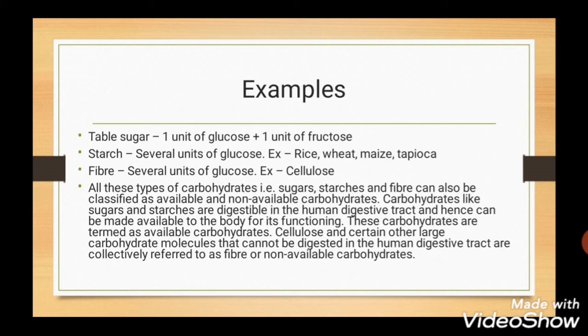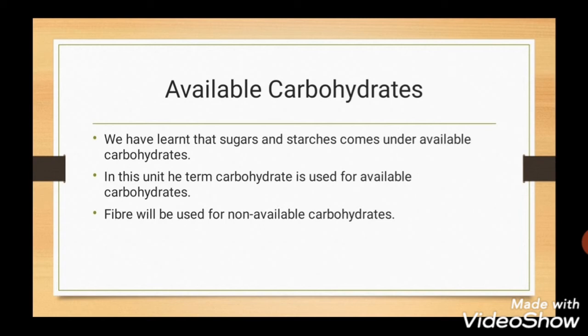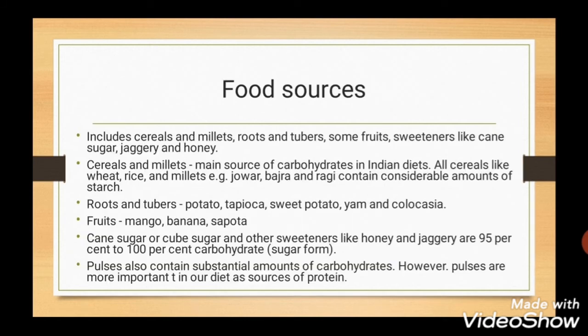Available carbohydrates include sugars and starches. Wherever the term 'carbohydrates' is used, it refers to available carbohydrates, and the term 'fibers' refers to non-available carbohydrates. Food sources of available carbohydrates include cereals and millets, roots and tubers, fruits, cane sugar and pulses. It is important to memorize these food sources, not only for exam purposes but also for preparing diet charts or advising patients.